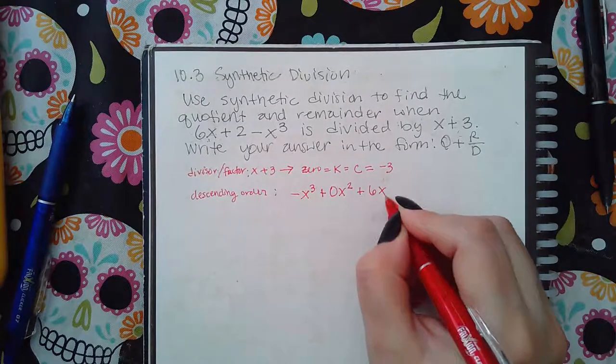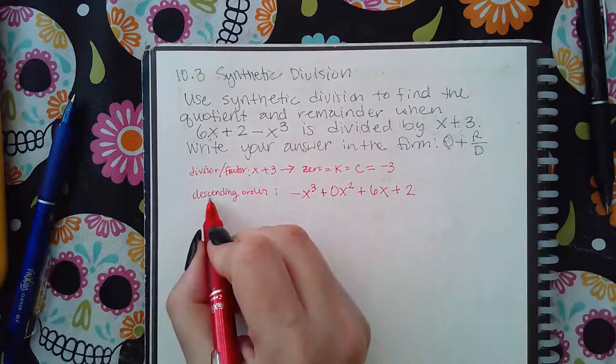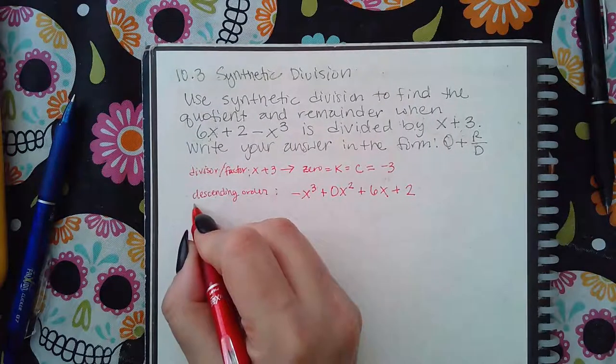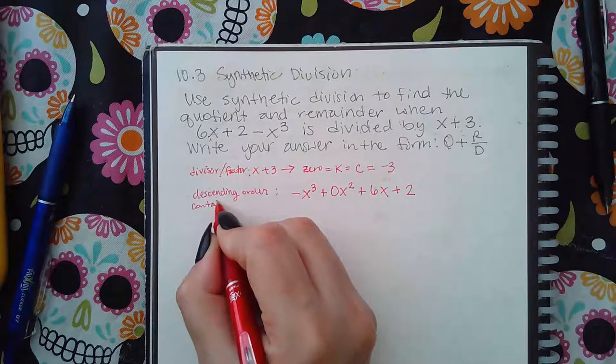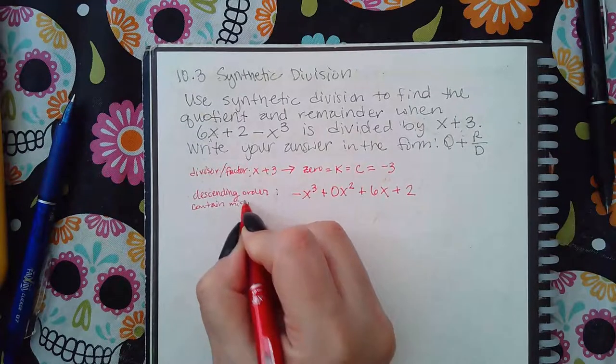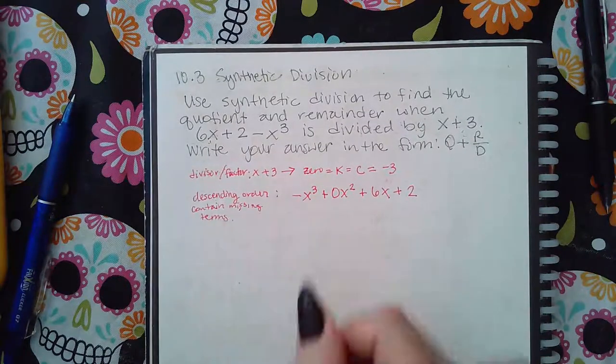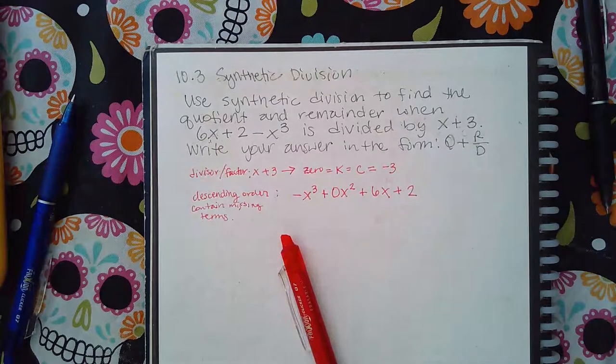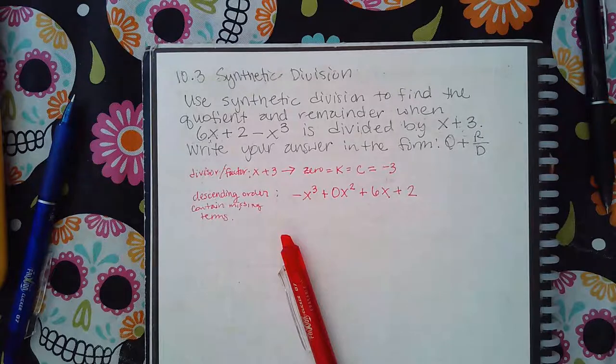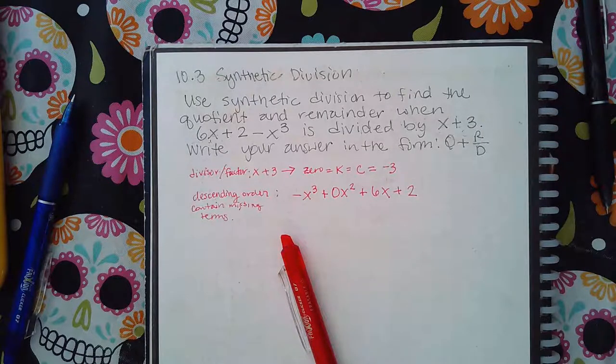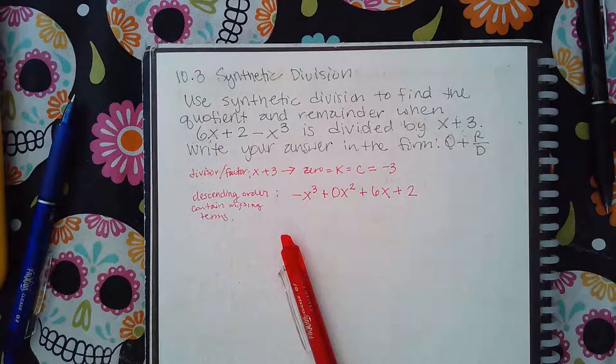And if you notice, I don't have an x squared term. So I have to fill in the blank and put plus 0x squared. Then I could put my x terms, positive 6x, and then I could put my constants, positive 2. So not only does it have to be in descending order, but it also has to contain missing terms. And how do you contain the missing terms? All you do is fill it in with the 0.